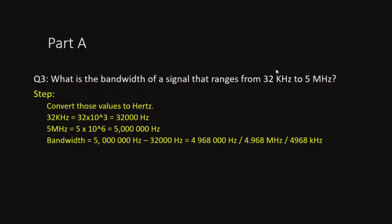Now you can do the calculation. Bandwidth equals highest minus lowest, so 5,000,000 hertz minus 32,000 hertz equals 4,968,000 hertz. Then look back at the answer choices — you can convert this into megahertz or kilohertz to identify the correct answer. The right answer is B, which is given in kilohertz.